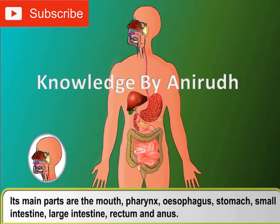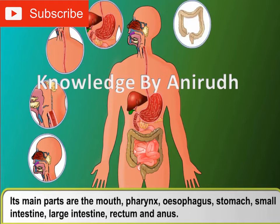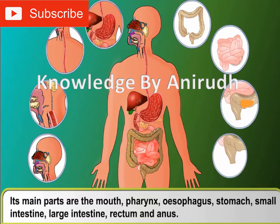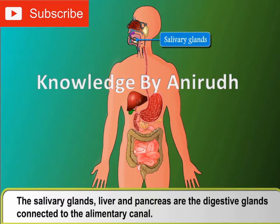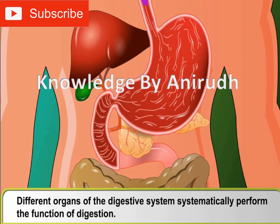The main parts of the alimentary canal are the mouth, pharynx, esophagus, stomach, small intestine, large intestine, rectum, and anus. The salivary glands, liver, and pancreas are the digestive glands connected to the alimentary canal. Different organs of the digestive system systematically perform the function of digestion.